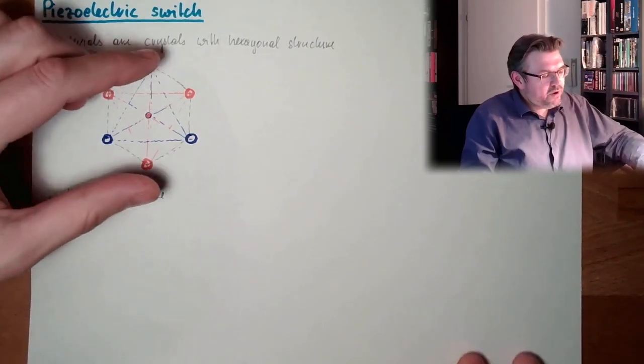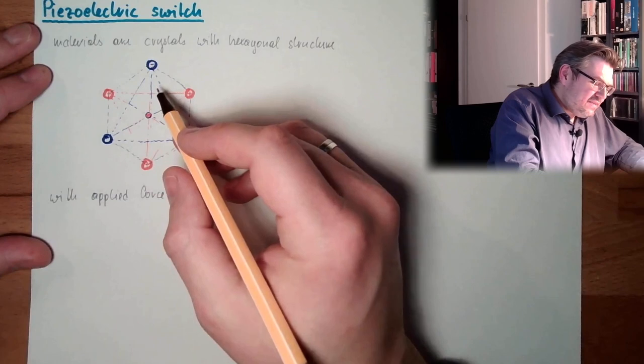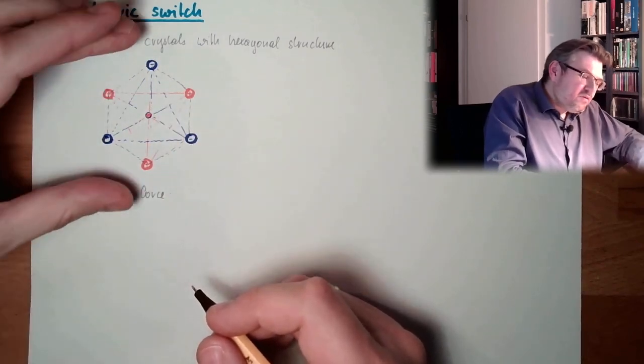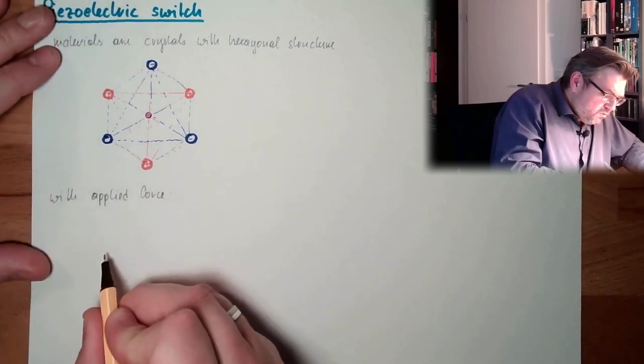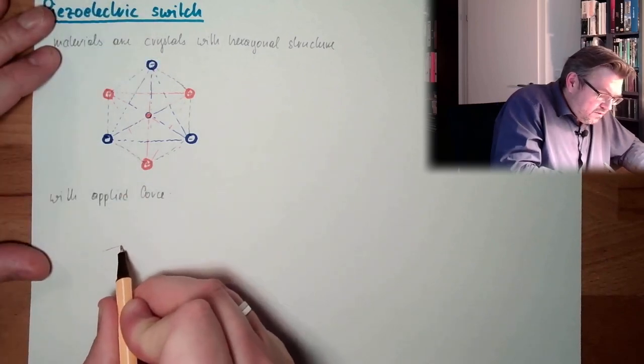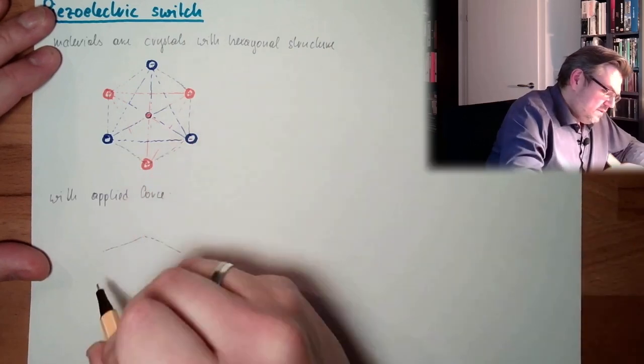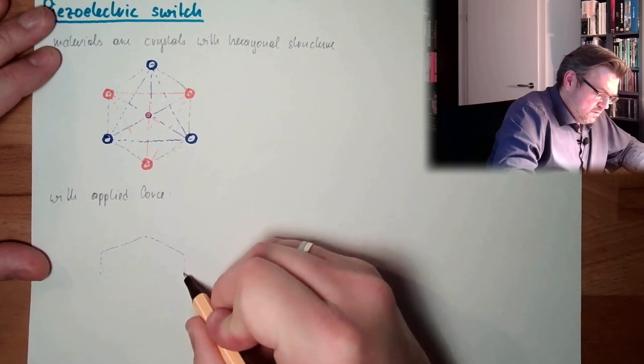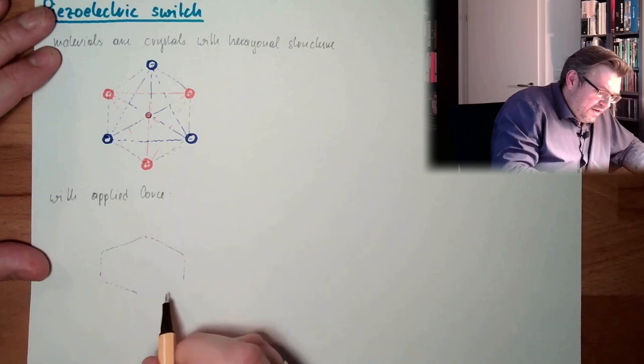With applied force, we're going to squeeze this a little bit. So, this hexagonal structure, not enough force to break it, however, quite enough force to squeeze this crystal structure a little bit. So this crystal structure will flatten out. It will not be a nice hexagon. It will simply be a squeezed hexagon.